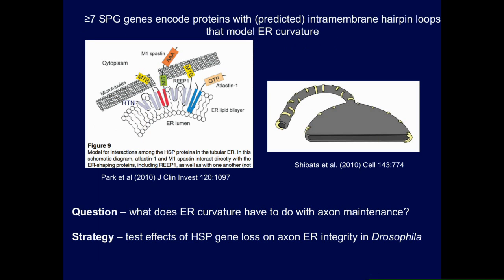We've focused on a subset of around seven proteins so far, but they account for a much larger fraction of mutations because many commonly found mutations affect these proteins. One feature they have in common is one or two intramembrane hairpin structures that can insert into the cytosolic face of the ER membrane, thereby distorting it and inducing curvature. In yeast, for example, the reticulon family and the REAP family collectively are responsible for formation of most cortical ER tubules. Knocking out one family alone gives little phenotype, but knocking out both families causes loss of most cortical ER tubules in yeast.